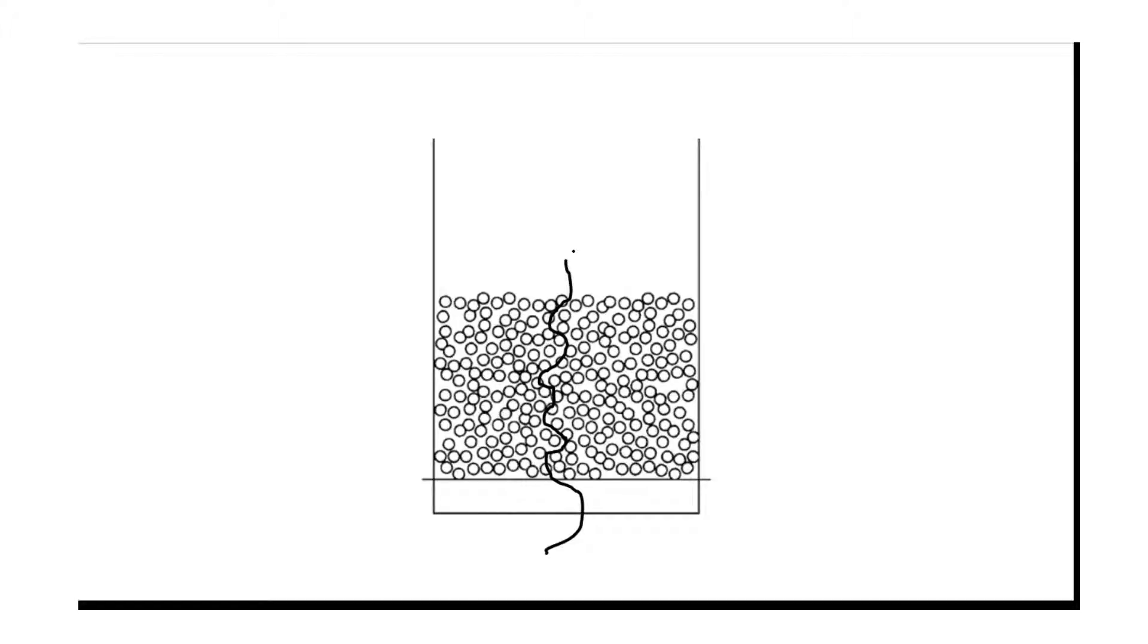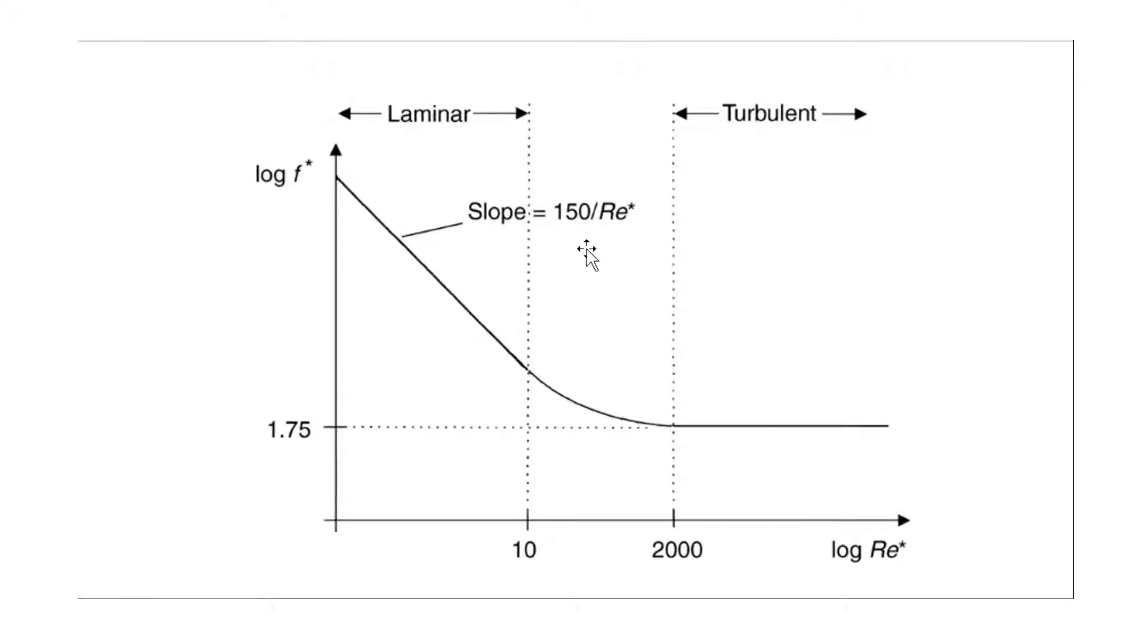The type of flow is determined by a number of factors which we will discuss. This graph here shows the friction factor versus the Reynolds number based on different types of fluid flow.